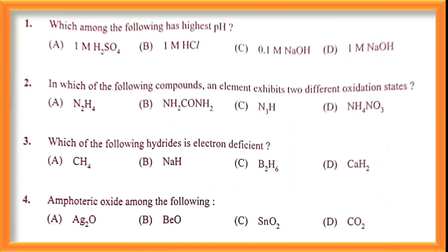Question number one: which among the following has the highest pH? You know the pH of an acid is less and pH of a base is more. Among all four options, options C and D are bases. Among these two, option D — one molar NaOH — has the highest pH value. So option D is the correct answer.